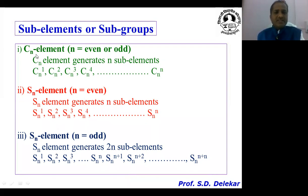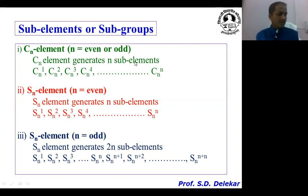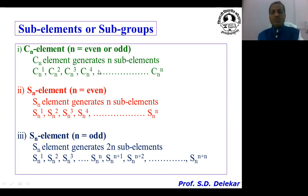The first is the Cn element when n is even or odd. Even numbers include 2, 4, 6 — as in C2, C4, or C6 symmetry — and odd numbers include C3, C5, and so on. Each Cn element generates n subelements, starting from Cn¹, Cn², Cn³, Cn⁴, up to Cnⁿ.